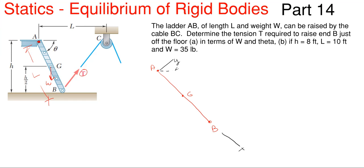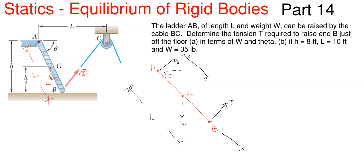So what that means is that my angle theta will be right here just as it was off the horizontal, and my tension is going up like this and my weight will be going down like this. I already know that this dimension from A to B is L. So if I'm going to sum moments at A using this orientation of x and y axes, what I'm going to need to know is the distance from A to G, and I'm going to need to know this angle of the tension force off of the ladder — we'll just call that alpha.